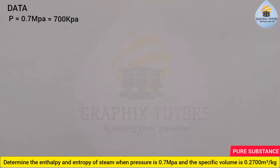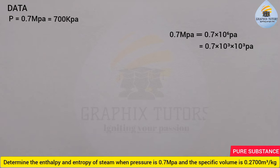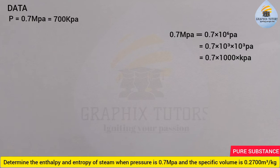To show how this works: 0.7 megapascal is the same as 0.7 times 10 to the power 6 pascal, because mega means 10 to the power of 6. Splitting this as 0.7 times 10³ times 10³ pascal — since 3 plus 3 equals 6 — we get 0.7 times 1000 times kilo, where kilo equals 10³. So 0.7 times 1000 gives 700 kilopascal.